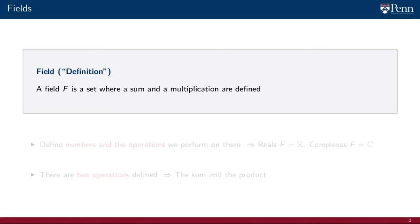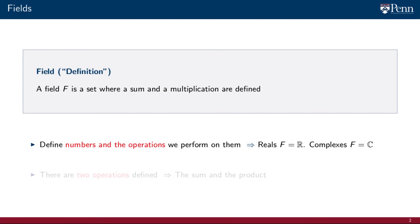The first definition we recall is that of a field F. If we are not interested in being formal, a field can be defined as a set in which a sum and a multiplication operation are defined. The introduction of a particular field is intended to define numbers and the operations we perform on them.